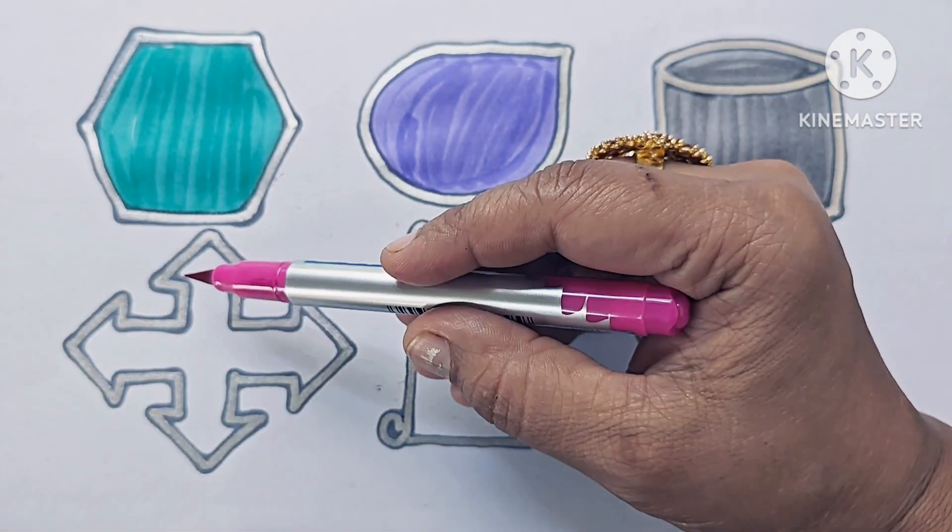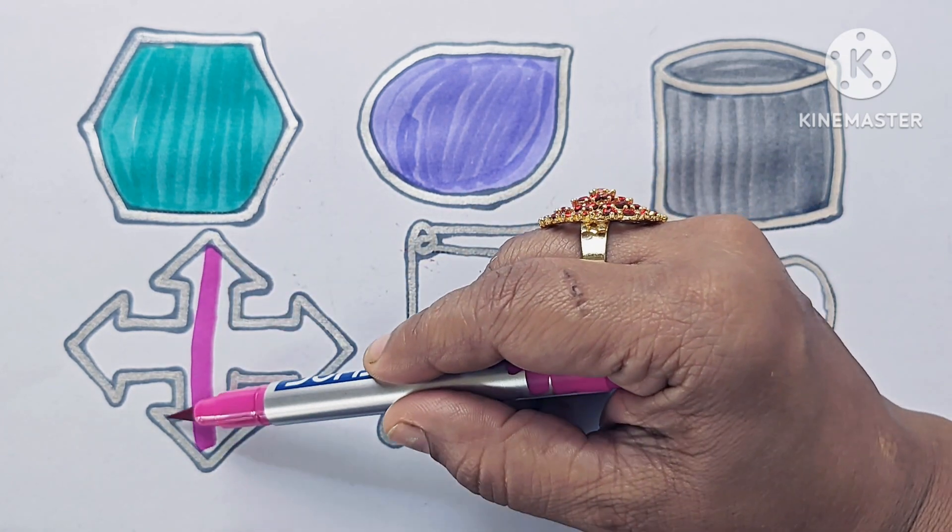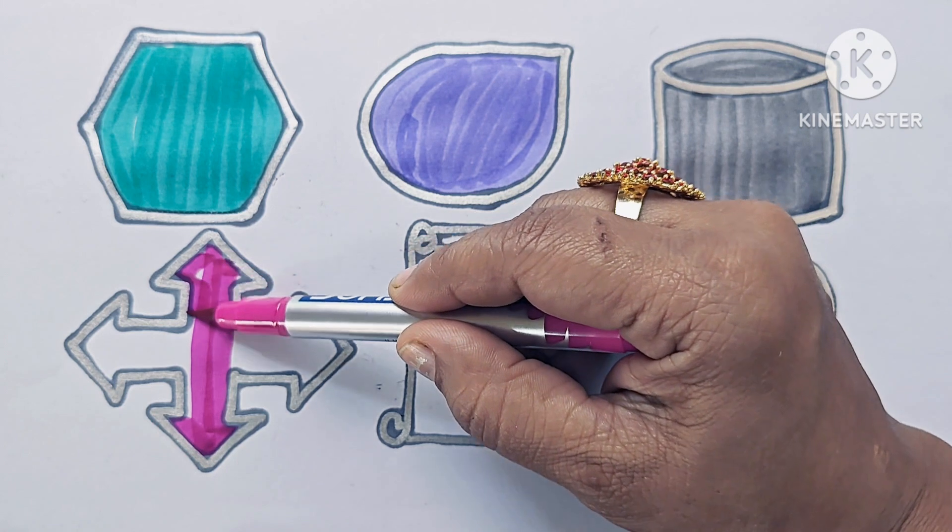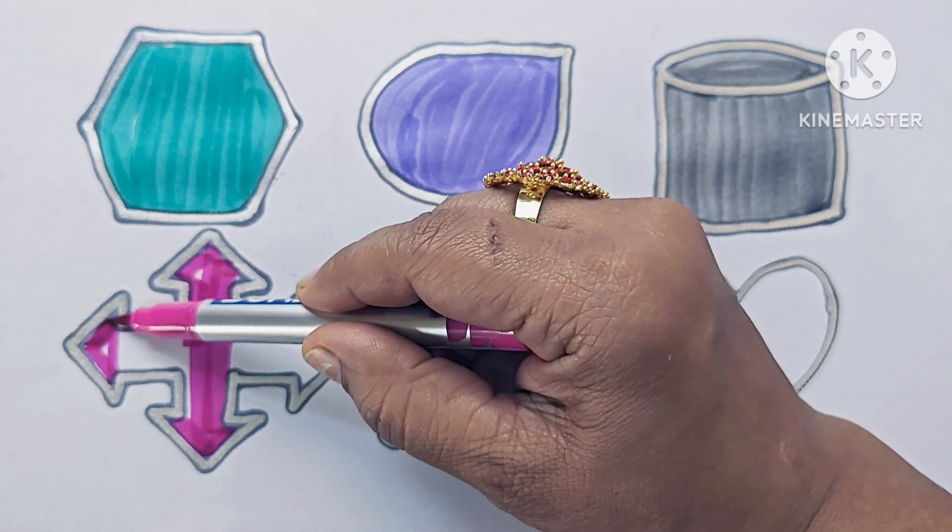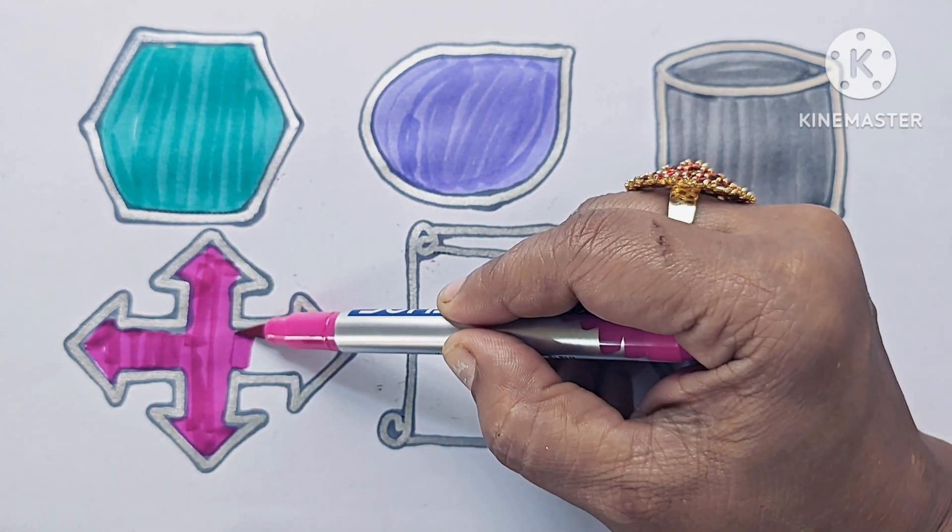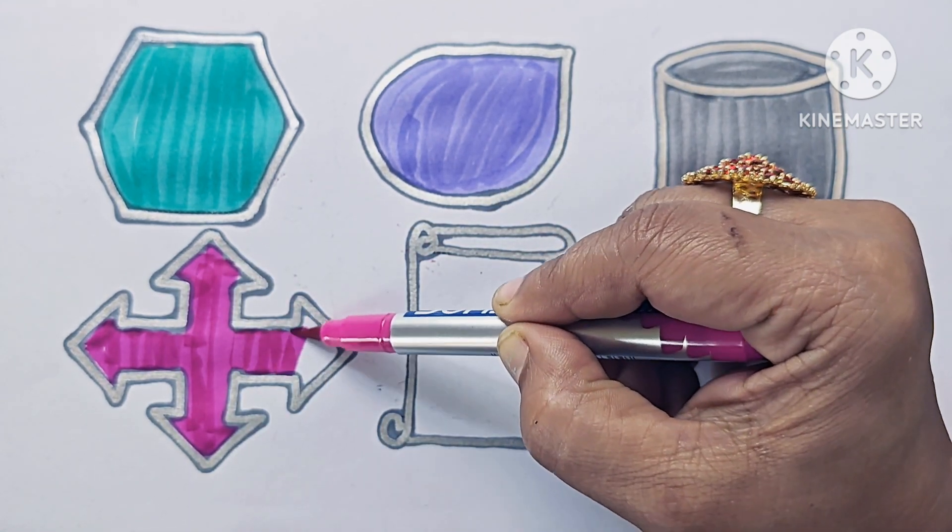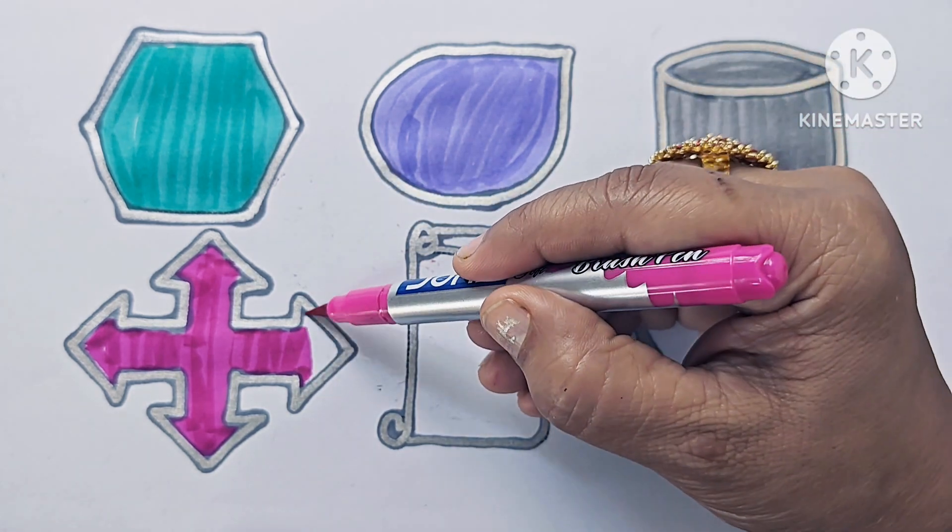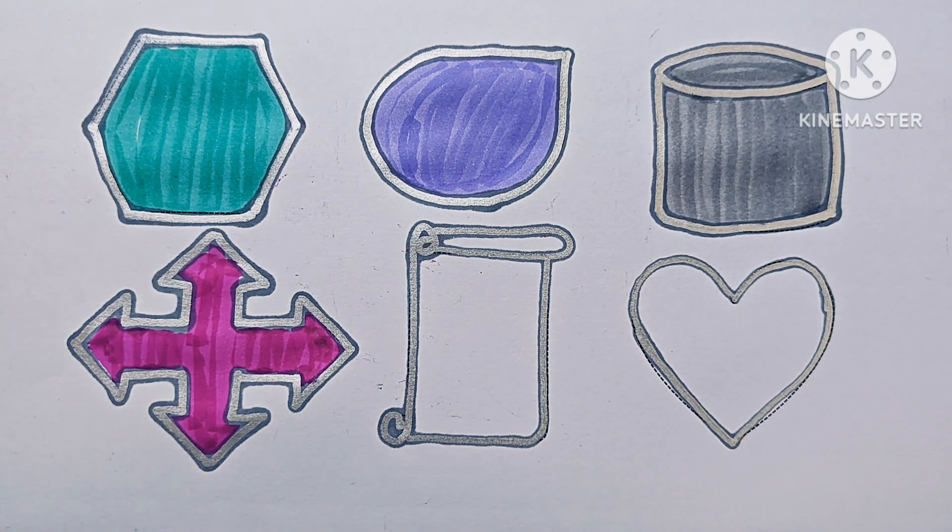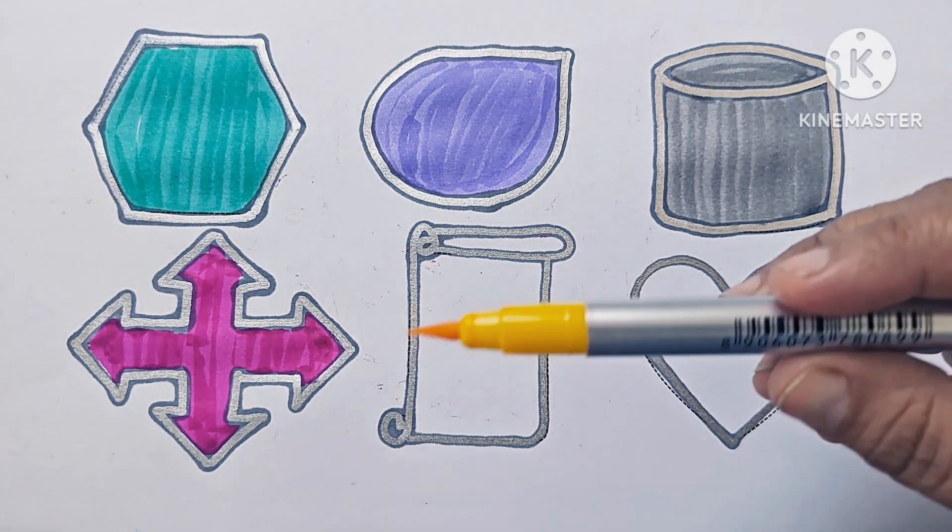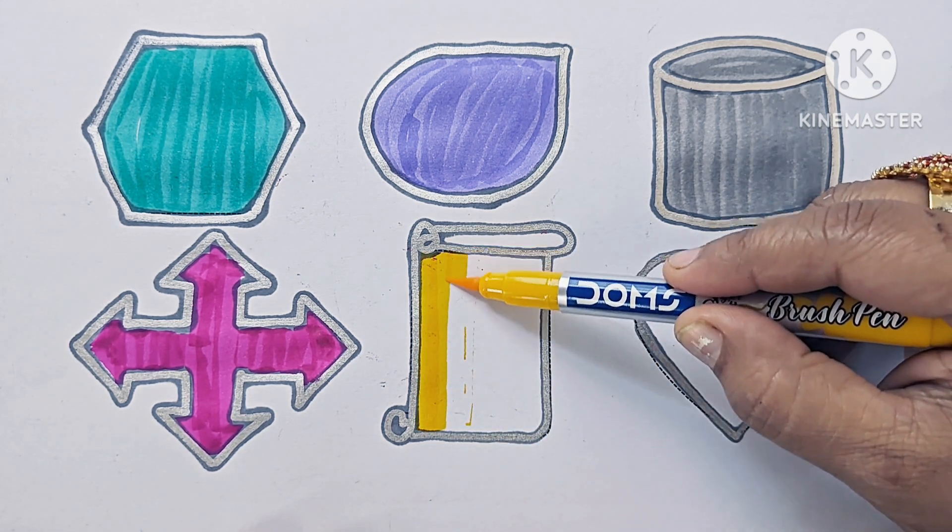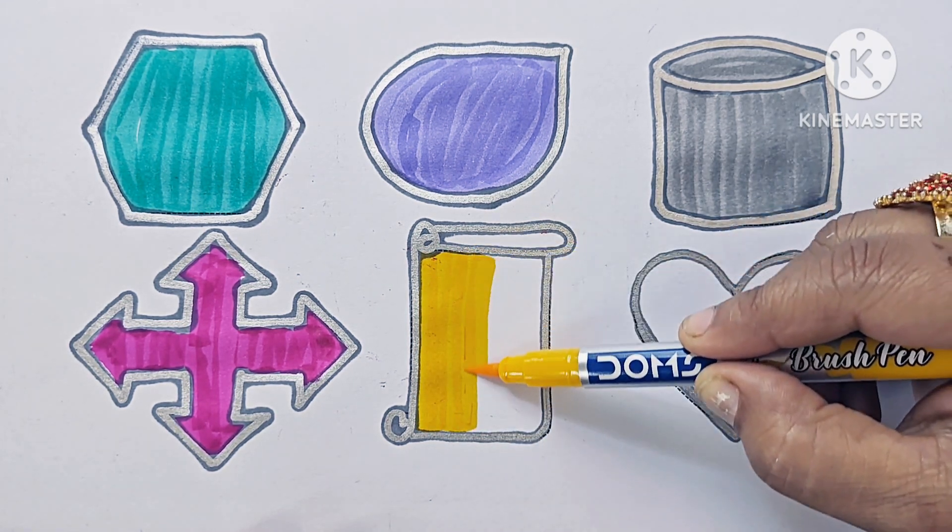This is Quad Arrow. This is a symbol, and the color is Pink. This is Vertical Scroll. Color is Yellow color.